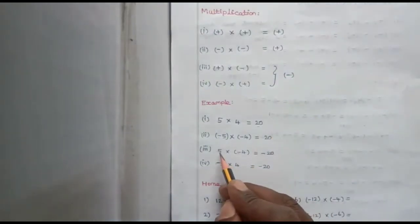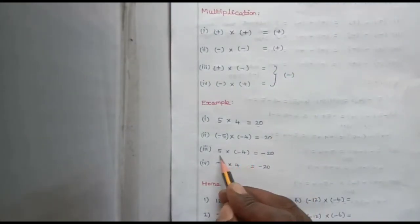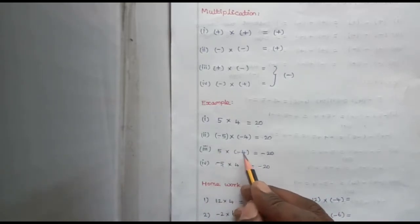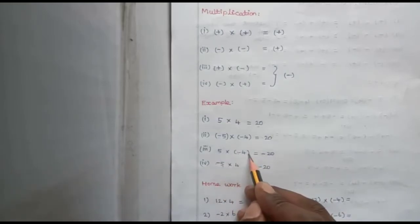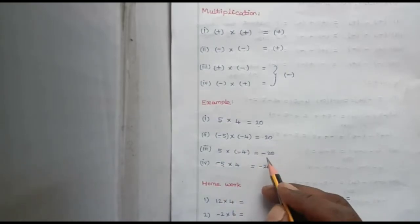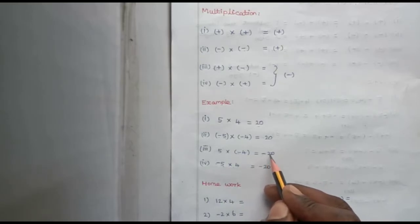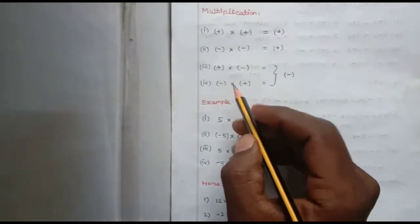The third one: when we multiply a positive integer and a negative integer, we get a negative integer. For example, 5 into minus 4 — 5 is a positive integer, 4 is a negative integer. Plus into minus gives minus, so 5 into 4 is 20. We get the answer minus 20, a negative integer.